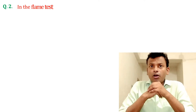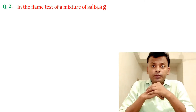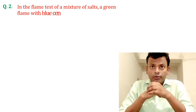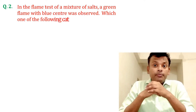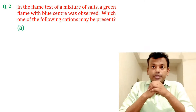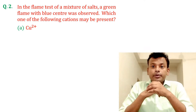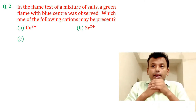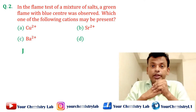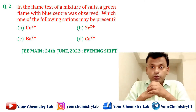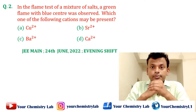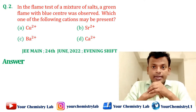Question 2: In the flame test of a mixture of salts, a green flame with blue center was observed. Which one of the following cations may be present? This question was set in JEMN 24th June Evening Shift 2022. Answer: Option A is the correct answer.